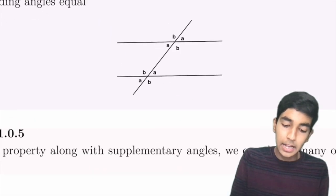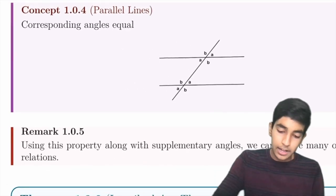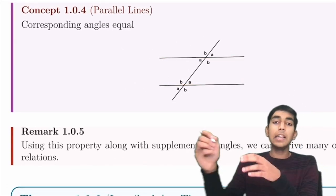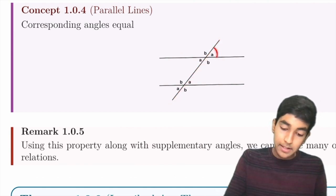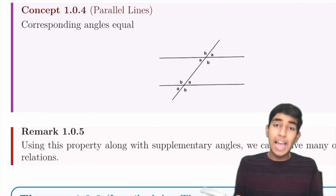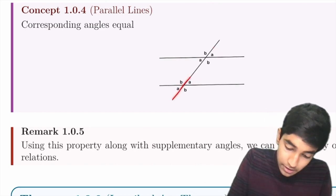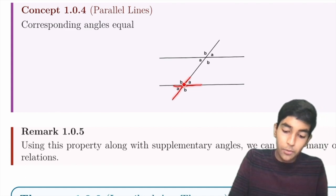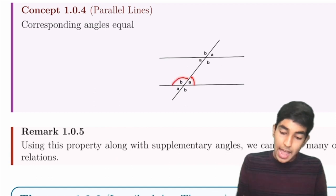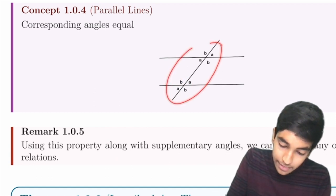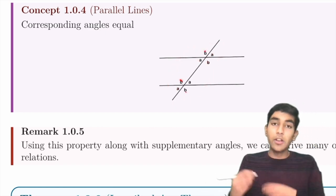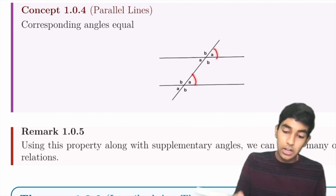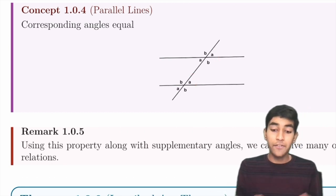Now we're going to move on to parallel line angles. If we have two parallel lines and a line cutting through them, then this angle is equal to this angle over here. At each intersection point, we can also derive many other angle relationships by vertical angles and supplementary angles. All the A angles marked are equal to each other and all the B angles are equal to each other by the parallel line condition.